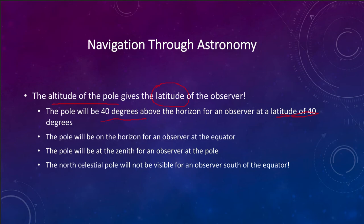Were they heading too far north or too far south? They could determine that by measuring where the pole star was. If the pole star was getting higher in the sky, they were heading further north; if it was getting lower, they were heading further south. So in the days before GPS and more accurate navigation, it gave a very good way to determine where you are when at sea with no other landmarks.